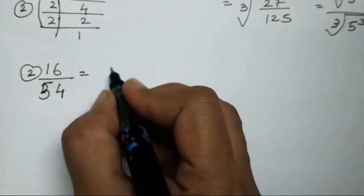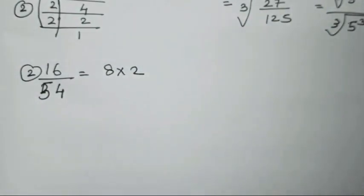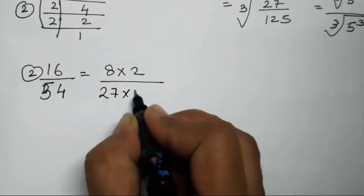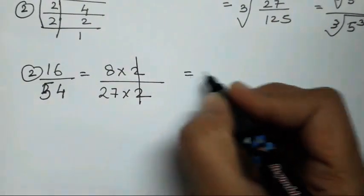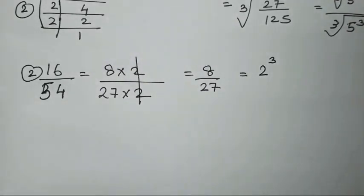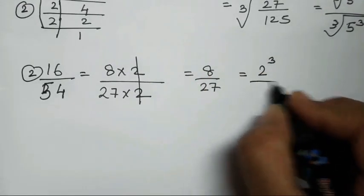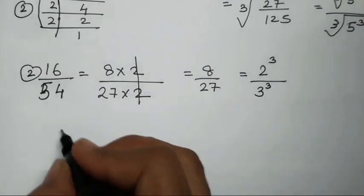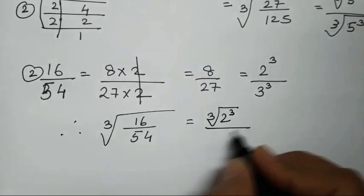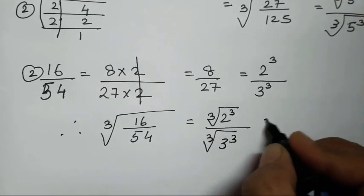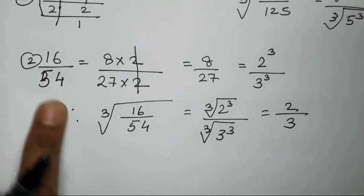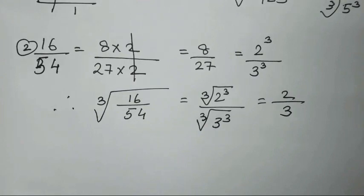The second one is the cube root of 16 upon 54. We know 16 is 8 into 2, and 54 is 27 into 2. The twos get cancelled, leaving 8 upon 27. The cube root of 8 is 2 (since 2 cubed is 8) and the cube root of 27 is 3 (since 3 cubed is 27). So the cube root of 16 upon 54 simplifies to 2 upon 3.